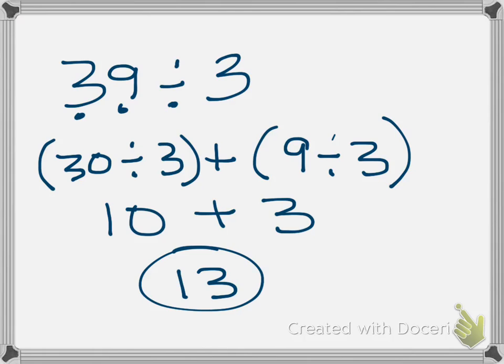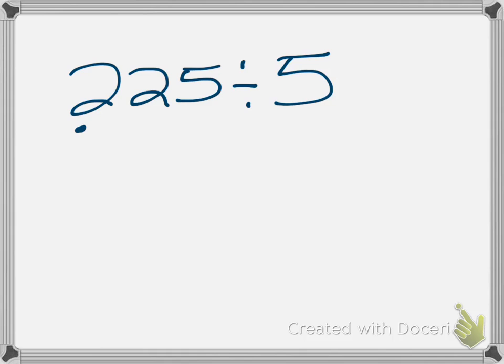Now sometimes it doesn't always work out where you have the exact value that goes into the dividend, so we're going to try another one where it's a little bit different. I'm going to do 225 divided by 5. Now this one we can break apart in a couple different ways, there are many different ways to do it depending on what your compatible numbers are, or the basic facts that you know. But for me I'm going to start with my 200. I know the value of the 2 is really worth 200 divided by 5.